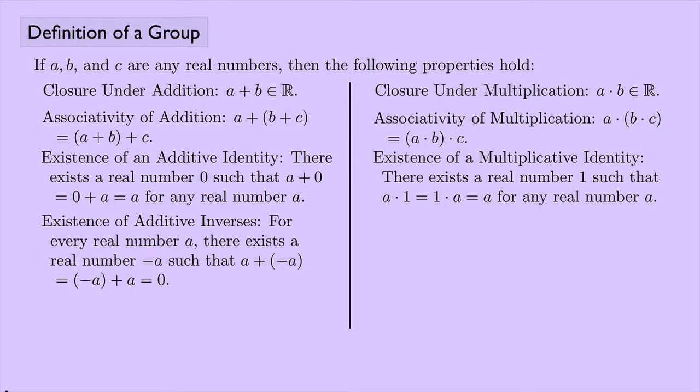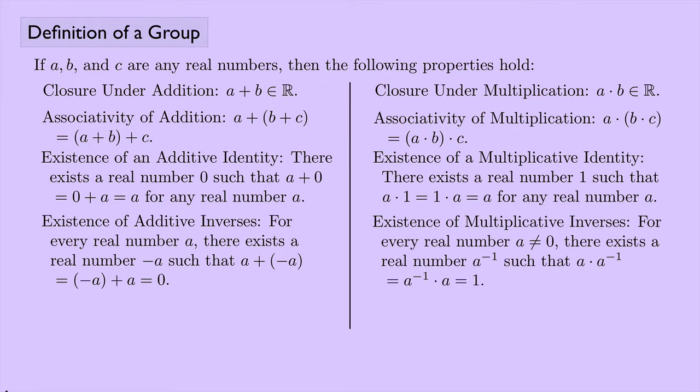The existence of additive inverses says that for every real number A, we have another real number, negative A, such that when you add them together in either order, you end up getting the identity, which in this case is 0. For multiplicative inverses, for every real number A not equal to 0, there exists another real number, A inverse, such that A times A inverse equals A inverse times A equals the identity, which is 1.